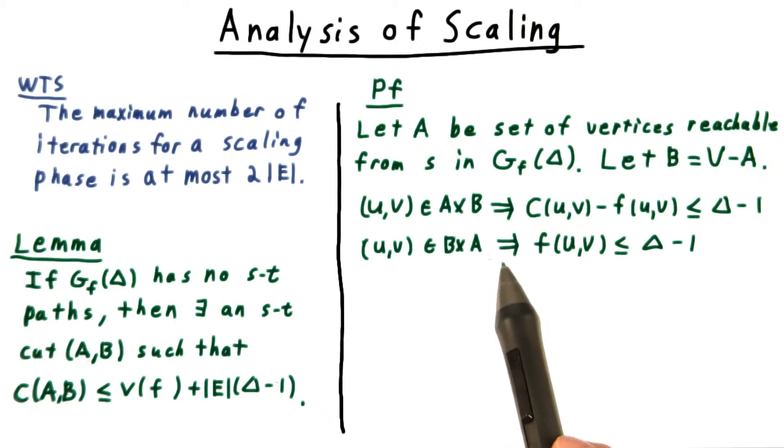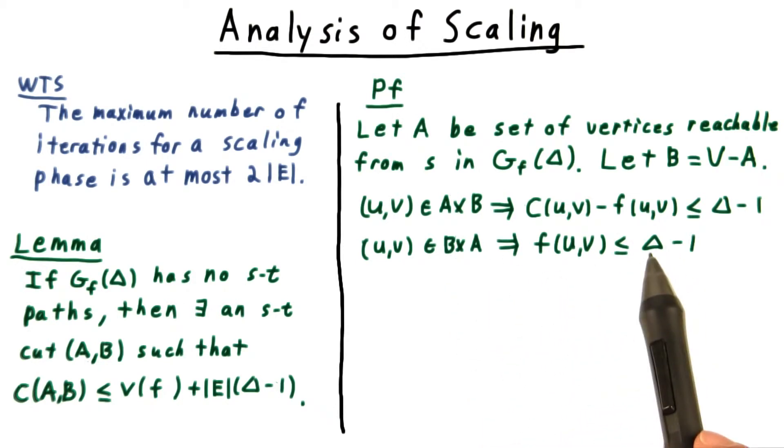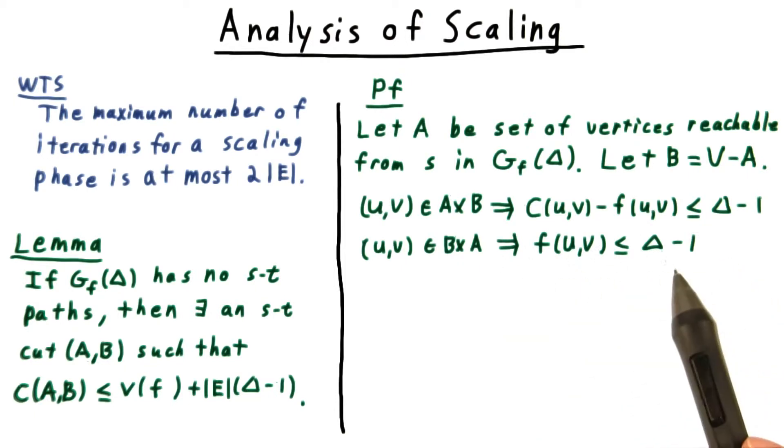And edges from B to A can't have flow more than delta minus 1, or the reverse edge would appear in the residual graph.